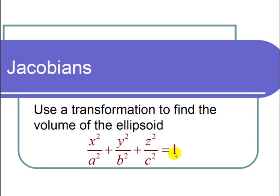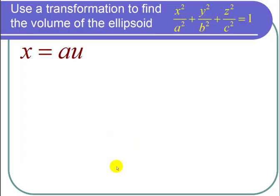So the trick on this is to find the transformation that's going to simplify this ellipsoid. This ellipsoid looks a little like a sphere except that we have an a, b, and c here. So the transformation that will take this ellipsoid and turn it into a sphere is we let x equals au, y equals bv, and z equals cw.